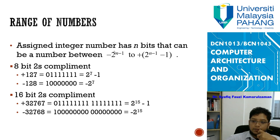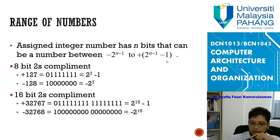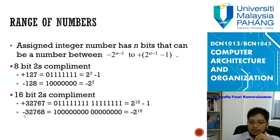A signed integer with n bits can represent numbers between negative two to the power of n minus one and positive two to the power of n minus one, minus one. For four bits, the range is negative eight to positive seven. For eight-bit two's complement, the range is plus 127 to minus 128. For 16-bit, the range is plus 32,767 to negative 32,768.